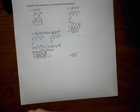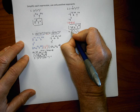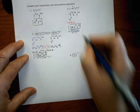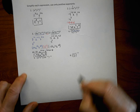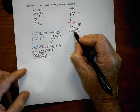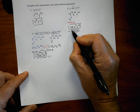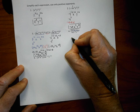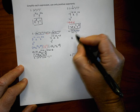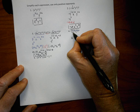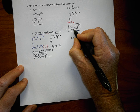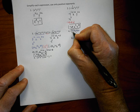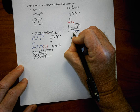Moving on to number four — we have a division problem indicated by a fraction bar. We use the quotient rule: divide the coefficients — 18 divided by 9 equals 2. Then for matching bases, subtract the exponents: numerator exponent minus denominator exponent. For x: the denominator x has an exponent of 1 (implied), so we get x to the two minus one.